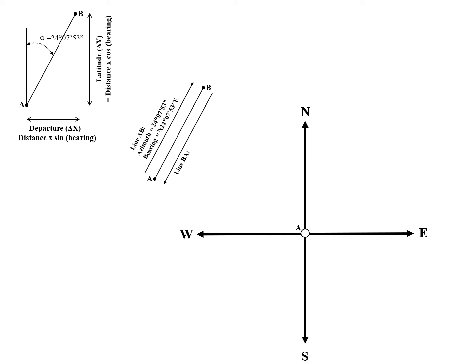Similarly, we can look at line BA. So going from B to A, the azimuth is 204 degrees, 7 minutes, 53 seconds. Now you should notice that this differs from the azimuth of line AB by exactly 180 degrees. And that's true in all cases. Any straight line going from one direction to the other are going to differ by 180 degrees. And that's just the definition of a straight line. Depending on your angle, it's going to differ by 180 degrees.